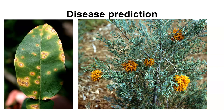For disease prediction, we go out and look in the field to see what's there. On the left we have citrus canker, and on the right we have cedar apple rust. We know what conditions are necessary for their spread. With cedar apple rust, you don't get the problem on apple if you don't have it on cedar in the area — so you monitor the cedars at the beginning of the year, find out when they're showing those particular forms, and then you can go out and spray the apple.